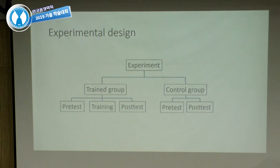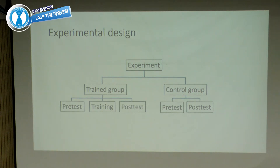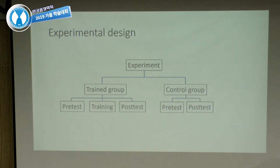Here is an experimental design that's quite standard in training studies. You randomly assign participants to either a training group or a control group. Both groups have a pre-test and a post-test phase, but critically, only the training group has a training phase. The control group has no training between pre-test and post-test.